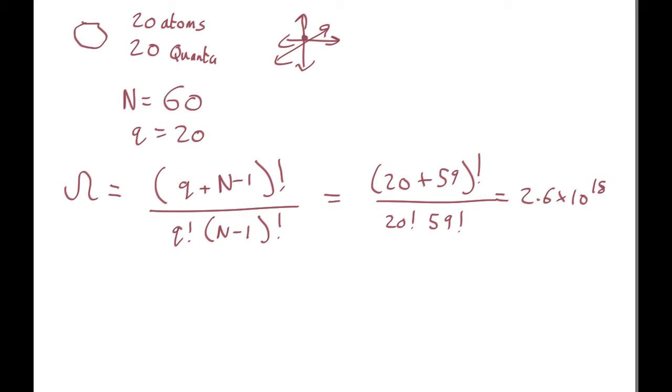But now, let's assume that it can only vibrate vertically. In that case, n is just the number of atoms. It's equal to 20, not 60 because it can't vibrate in the other two directions. Q is still 20.